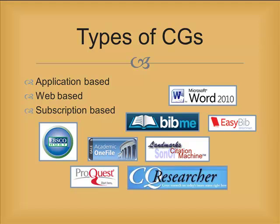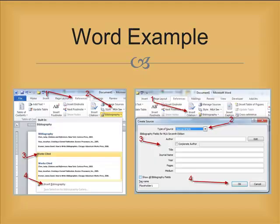Caution! No citation generator is 100% perfect. The writer is responsible for making any corrections needed to conform to the required style. Some word processing applications are including citation generators now. These tend to be the least sophisticated and most prone to error. So if you use one, be sure you understand the elements of citation and make the necessary corrections. Here's how to use Microsoft Word's citation generator.